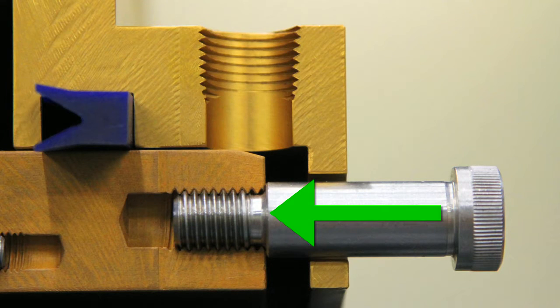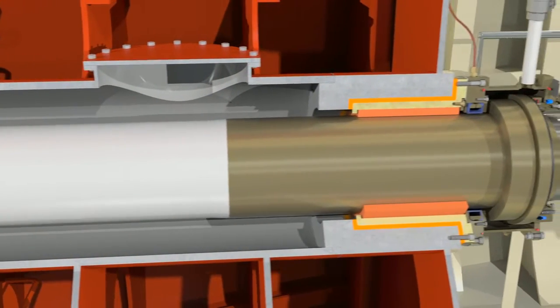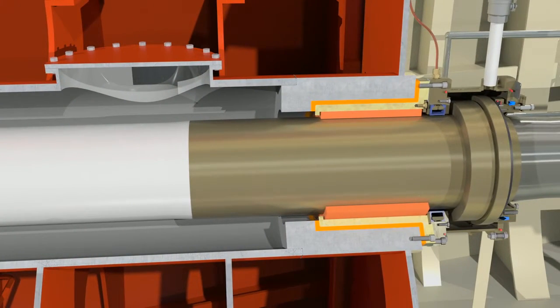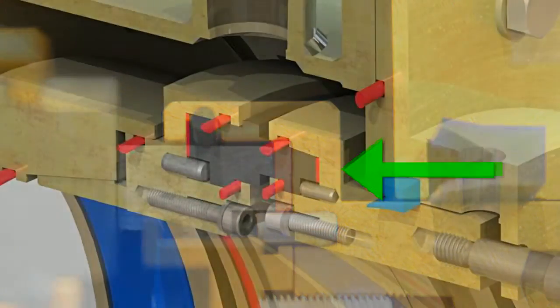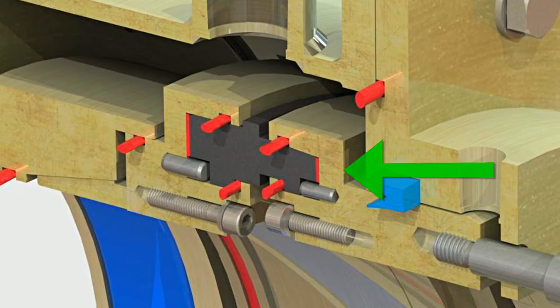The springs push the stationary face aft toward closing the face gap, and whatever the hydrostatic pressure is at the depth of the propeller, this pressure is assisting the springs by pushing against this area in the same direction as the springs.